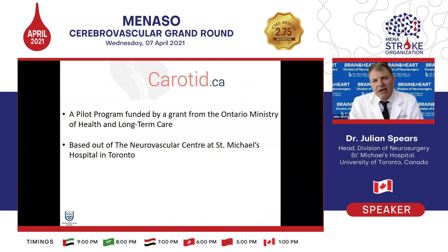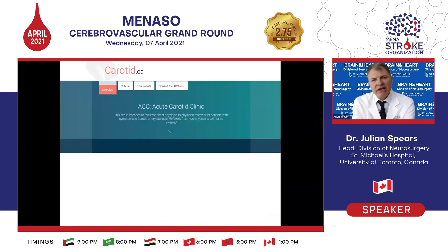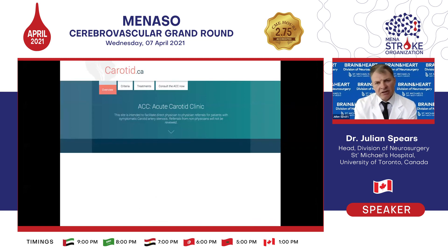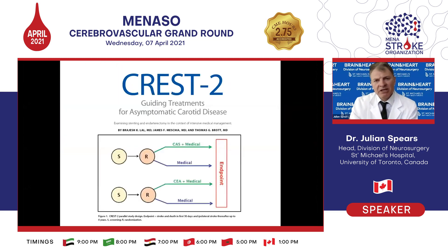We established a virtual clinic called the Acute Carotid Clinic, where practitioners can log on and submit a short thumbnail referral. Our assistant corresponds electronically with the referring doctor within 24 hours, and usually the patient is seen within 24 to 48 hours. At that point, they are triaged, imaged, and triaged for revascularization. I'll be honest — we've evolved such that most are going for angioplasty and stenting because of the seduction of minimally invasive procedures.